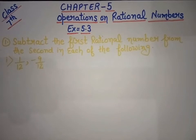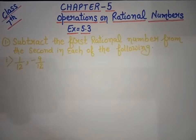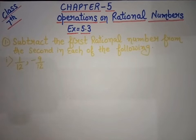Good morning students, class 7, chapter 5 — Operations on Rational Numbers. Today we will start exercise 5.3. The first sum says: subtract the first rational number from the second in each of the following.